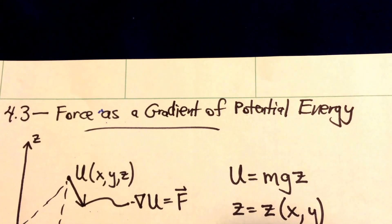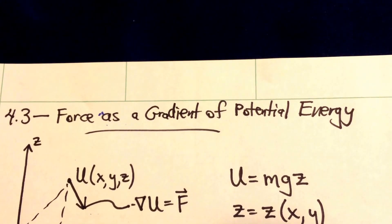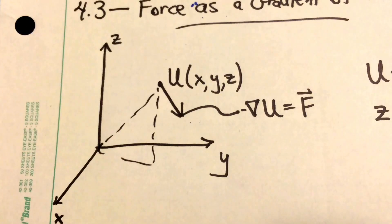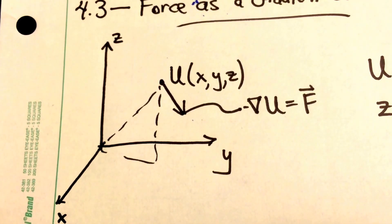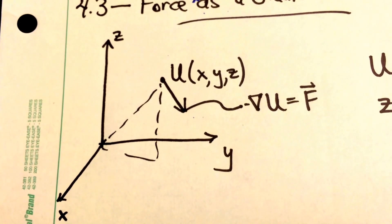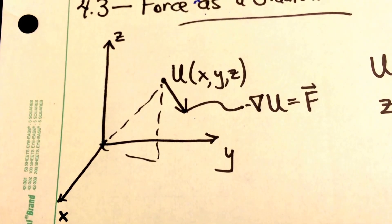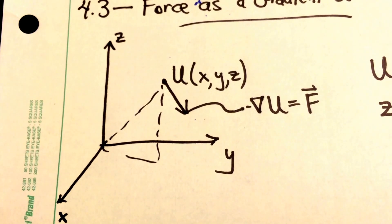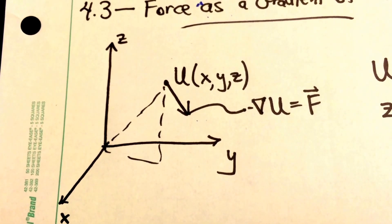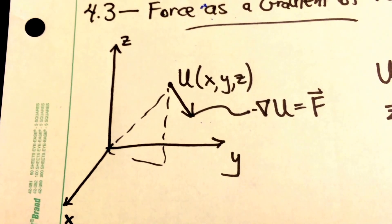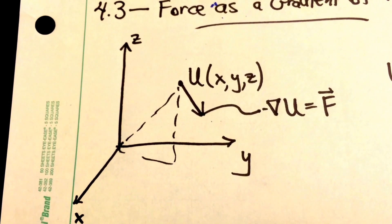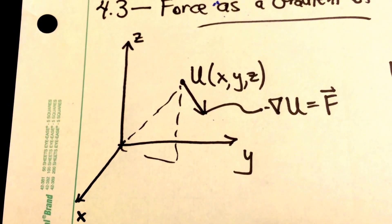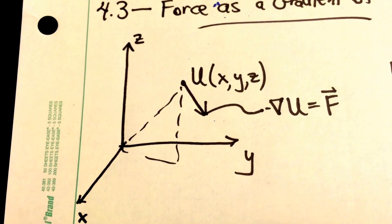In this section, we'll discuss how to write the force for a system as the gradient of a potential energy function. In principle, the potential energy function can be dependent upon all three positional coordinates: x, y, and z. So if you want to calculate the force due to a particular potential energy function, you need to take the negative gradient of that potential energy function, and that'll give you a vector as described in the book. But when you have three coordinates, it can be a little tricky to visualize what the derivative of that potential energy function is going to look like.